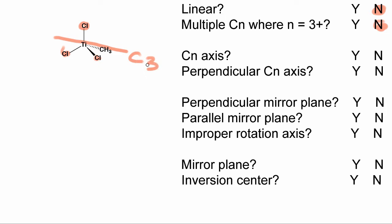The next question is does it have a Cn axis? We've already identified that we have a C3 axis that goes through the titanium-methyl bond, so this is a yes. However, the next question is do we have a perpendicular Cn axis, and the answer to that is no — we can't find one anywhere that will rotate any of these chlorides back into each other while leaving the methyl alone. So we'll say that this is a no, and based off of this we already know that we're going to have a C-type point group.